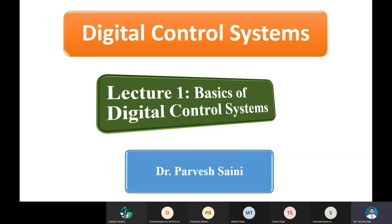A digital control system is still a control system, but it is about how we process the available data and what kind of controller we use. The nature of the real world is totally analog — we have analog signals — but we have methodologies to acquire those analog signals and techniques, systems, and tools to process them in digital form.